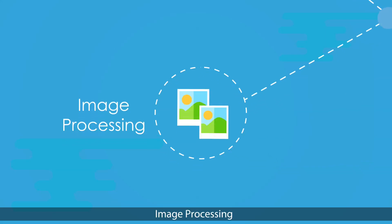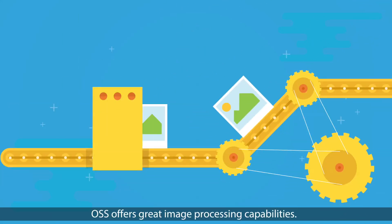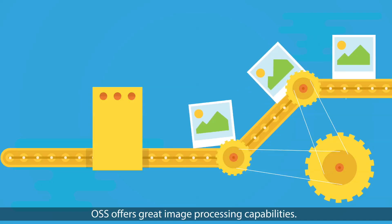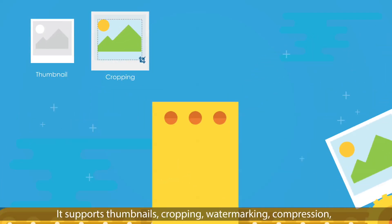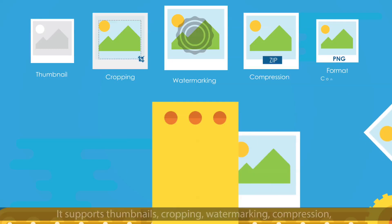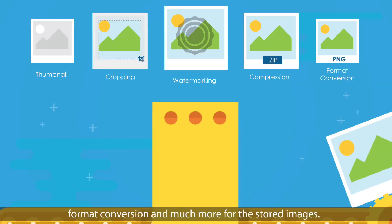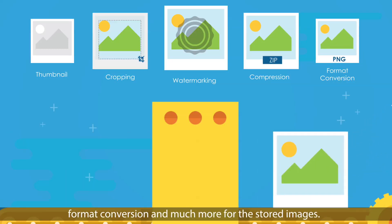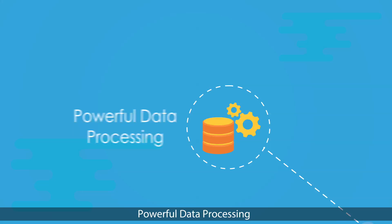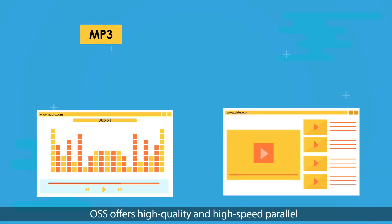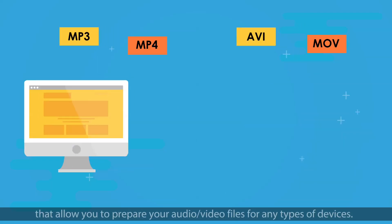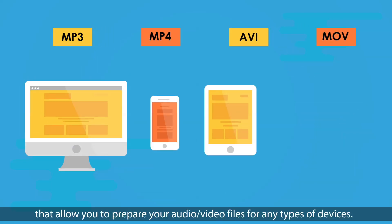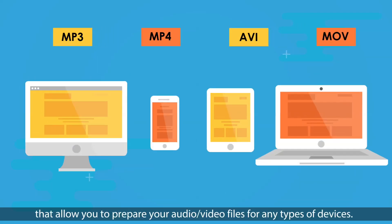Image Processing: OSS offers great image processing capabilities. It supports thumbnails, cropping, watermarking, compression, format conversion, and much more for stored images. Powerful data processing: OSS offers high-quality and high-speed parallel audio and video transcoding capabilities that allow you to prepare your audio and video files for any types of devices.